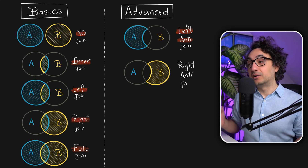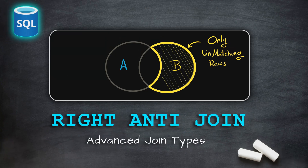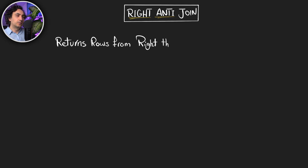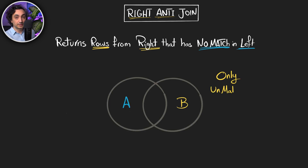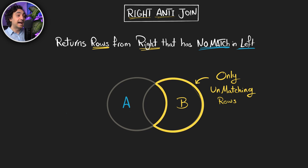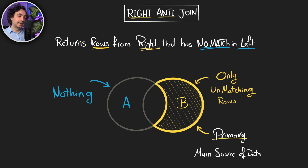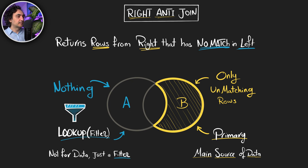Now we're going to speak about the exact opposite: the right anti-join. It's very similar but we are just switching sides. The right anti-join returns rows from the right table that have no match in the left table. From the two circles, we want only the unmatching rows from the right table — rows that exist in B but not in A. The left table is used only as a filter, as a lookup, to check existence.